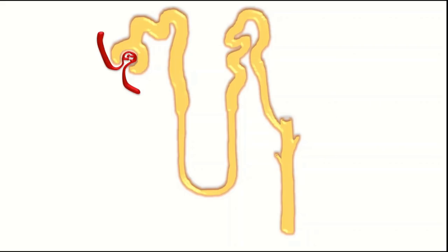This is a nephron, as you all know. The nephron has various parts: the Bowman's capsule, proximal convoluted tubule, loop of Henle, distal convoluted tubule, collecting tubules and collecting duct. The loop of Henle is further divided into thick descending portion, thin descending portion, thin ascending portion and thick ascending portion.